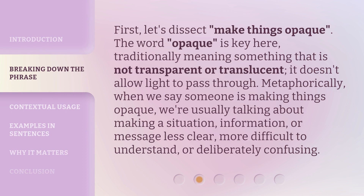First, let's dissect 'make things opaque.' The word 'opaque' is key here. Traditionally, it means something that is not transparent or translucent — it doesn't allow light to pass through. Metaphorically, when we say someone is making things opaque, we're usually talking about making a situation, information, or message less clear, more difficult to understand, or deliberately confusing.